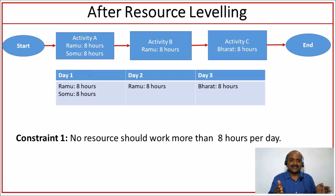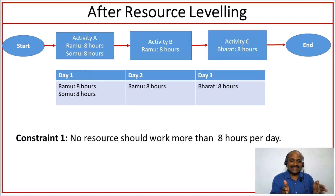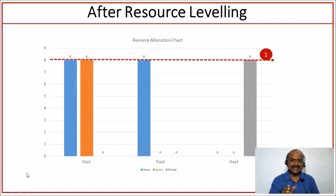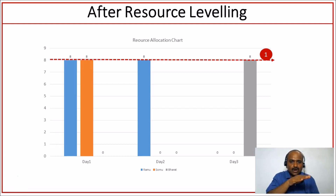Now what is happening? In order to honor this constraint, we are extending the project duration. Earlier, the project was supposed to get completed in two days. Now the project is getting completed in three days. So after resource leveling, the resource allocation shows Ramu, Somu, and Bharat are all assigned within eight hours per day. That's how we see resources are leveled.